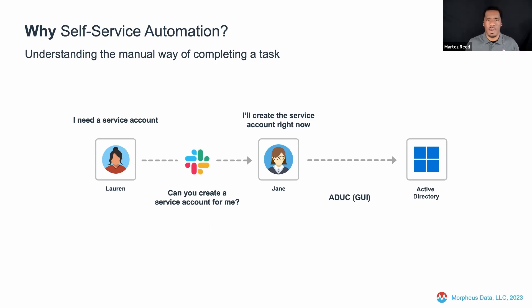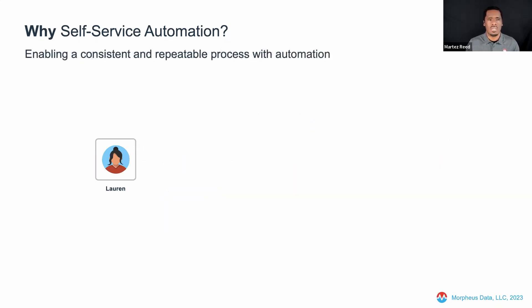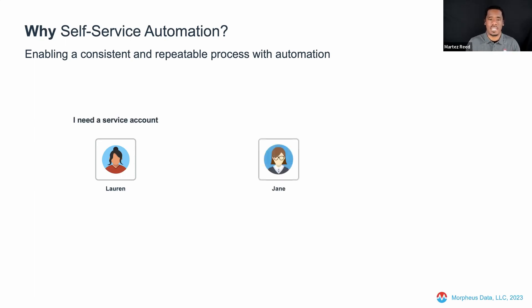When you start thinking about automation journeys that organizations take, there are often a number of steps as part of the process. In this example, the next logical step is: why is Jane creating this new service account via the GUI? Now that we've understood the manual process, this is what often happens next — to enable a more consistent and repeatable process leveraging automation. Lauren still needs that service account, Jane is still the person to facilitate it, and Lauren sends Jane a Slack message asking for a service account.